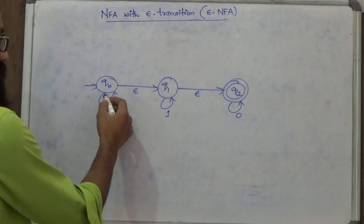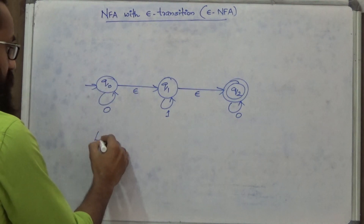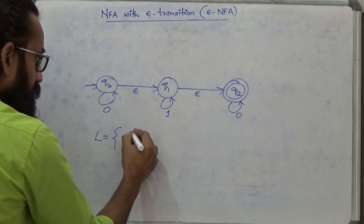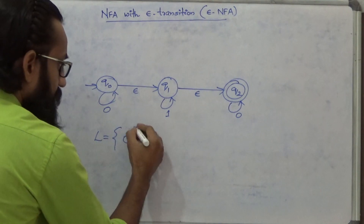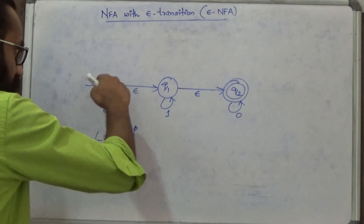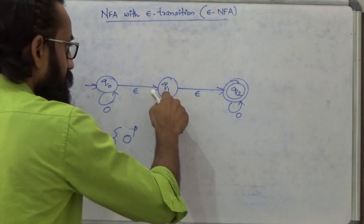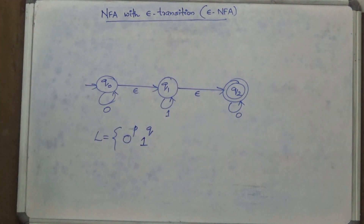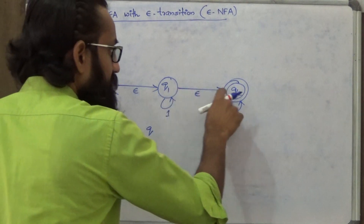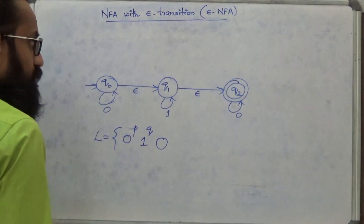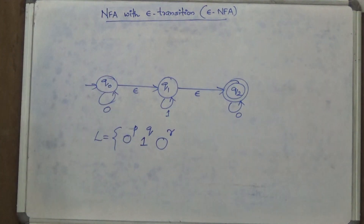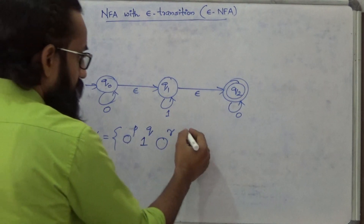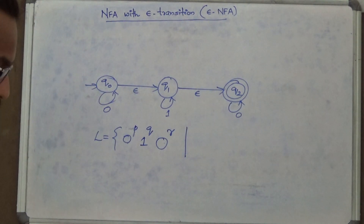From Q0, it can consume any number of zeros — let's say P number of zeros. Then without consuming anything, it goes to state Q1. From Q1, it can consume Q number of ones. From Q1, without consuming anything, it can go to Q2. In Q2, it can consume R number of zeros. So the strings are of the form 0^P 1^Q 0^R.